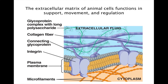Animal cells produce an elaborate extracellular matrix. This layer helps hold the cells together in tissues and protects and supports the plasma membrane. The main components of the extracellular matrix are glycoproteins — proteins bonded with carbohydrates. The extracellular matrix may attach to the cell through other glycoproteins that bind to membrane proteins called integrins. Integrins span the membrane, attaching on the other side to proteins connected to microfilaments of the cytoskeleton, transmitting information between the ECM and the cytoskeleton and integrating changes occurring outside and inside the cell.